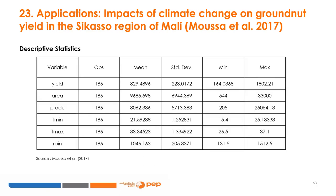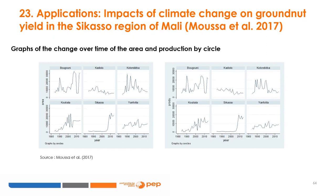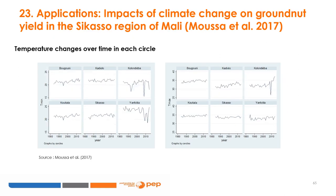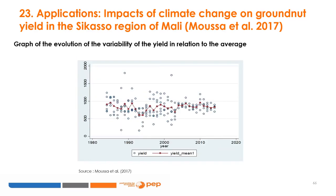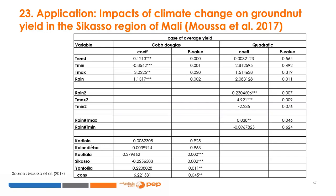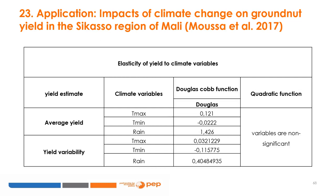The following are the descriptive statistics for the analysis data. Here are the trends in the change over time of the different areas and the agricultural production over time in each of the circles studied in the Sikaso region of Mali. Here are also the graphs of the change over time of temperatures in each circle, and the trend of the variability of yield compared to average values. The estimation of the fixed effects model, Cobb-Douglas model, and quadratic model on the analysis data gives the following results on yield elasticities to climate variables.